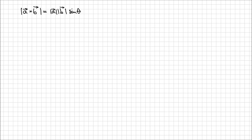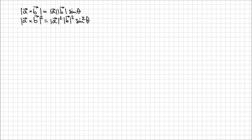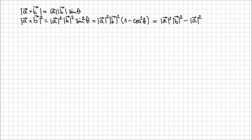I'm going to bring both expressions to power 2. The magnitude of the cross product between a and b at power 2 is going to be magnitude of a squared, magnitude of b squared, sine squared of theta. We know that sine squared of theta is 1 minus cosine squared of theta, based on the fundamental trigonometric identity. I'm going to replace sine squared of theta with 1 minus cosine squared of theta and expand the parentheses, giving magnitude squared of a times magnitude squared of b minus magnitude squared of a times magnitude squared of b times cosine squared of theta.